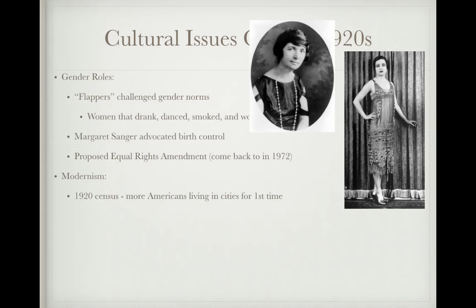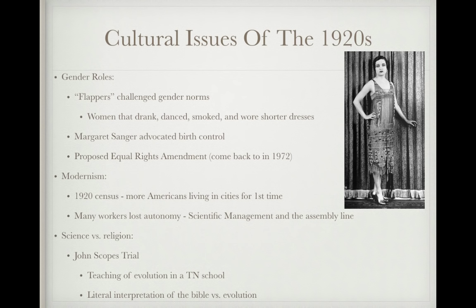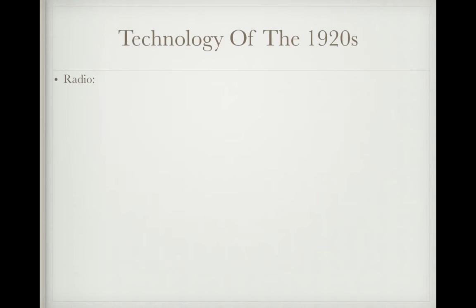Regarding modernism: the 1920 census showed more Americans were living in cities for the first time in U.S. history. Many factory workers lost autonomy due to scientific management and the assembly line. Science versus religion was a hot-button issue, evident in the John Scopes Trial — a biology teacher who taught evolution in a Tennessee school, which was illegal in that state. The trial focused on the literal interpretation of the Bible versus evolution.